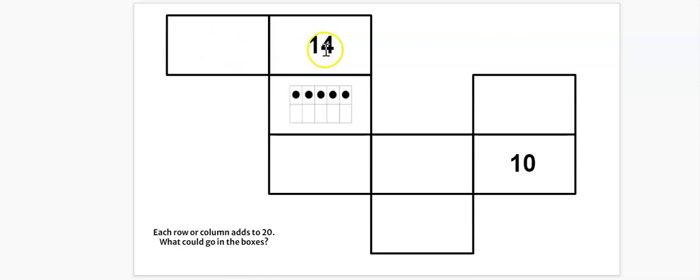So each row and each column adds up to 20. Let's look, we've got some numbers here. We have 14. So we know this box because this row here has to add up to 20.